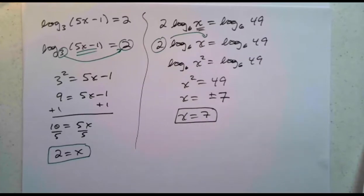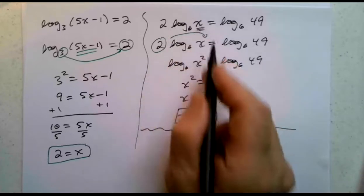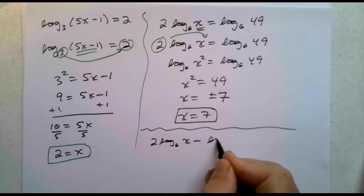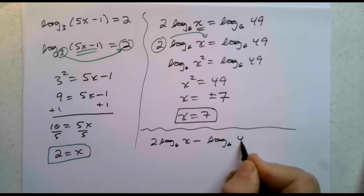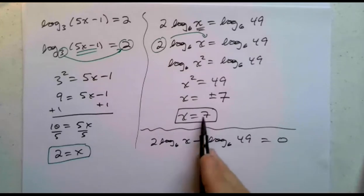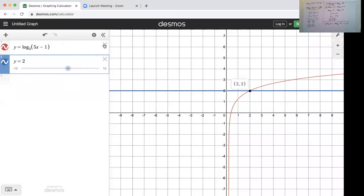Now, how can I check that? Well, I can do that on Desmos as well. 2 log 6 of x equals log 6 of 49. I can rewrite that as 2 log 6 of x minus log 6 of 49, and see does that equal 0? What x value does that equal 0? We hope it equals 0 with 7.